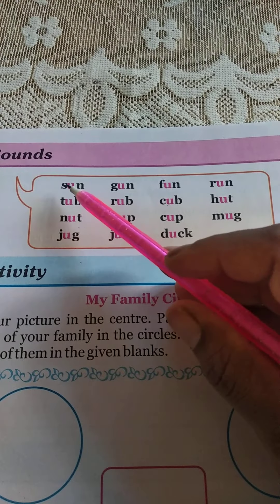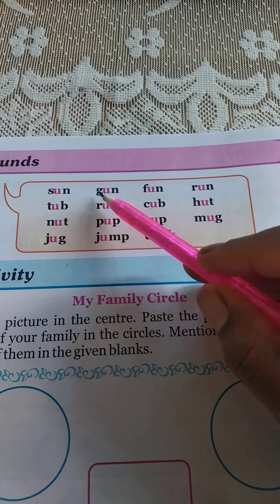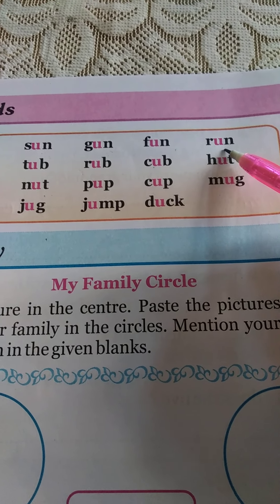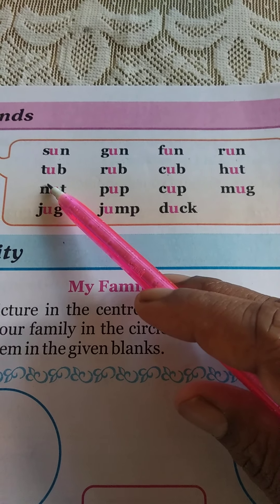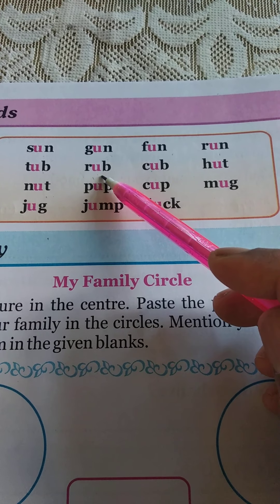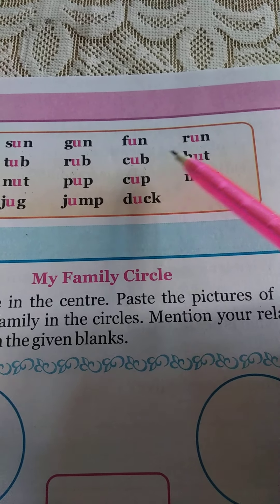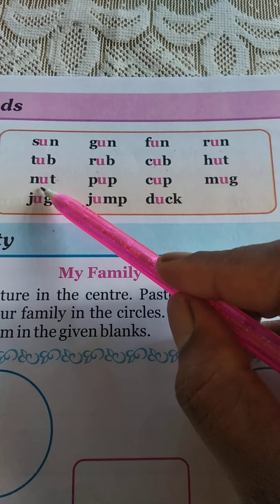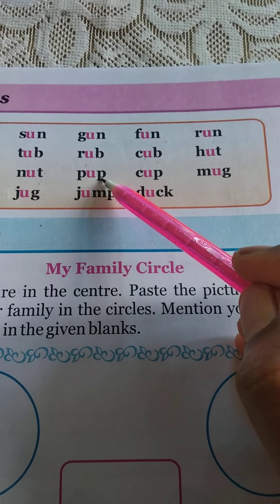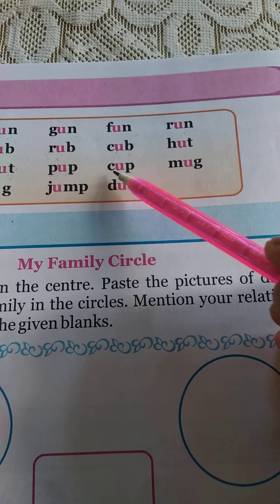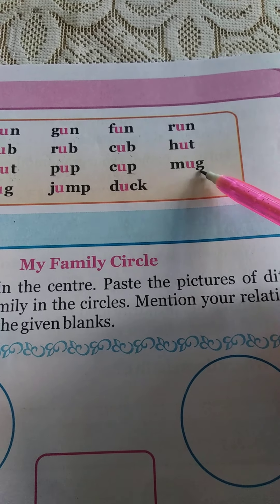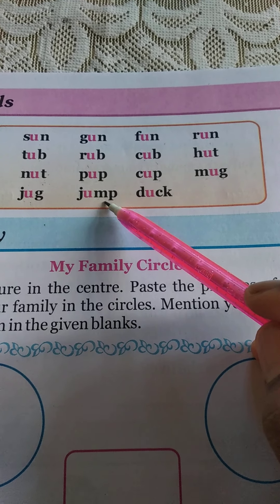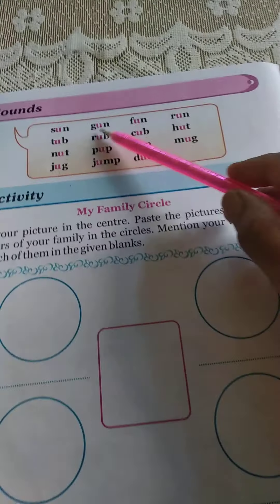Here, word family practice with the short 'u' sound: S-U-N — Sun. G-U-N — Gun. F-U-N — Fun. R-U-N — Run. T-U-B — Tub. R-U-B — Rub. C-U-B — Cub. H-U-T — Hut. N-U-T — Nut. P-U-P — Pup. C-U-P — Cup. M-U-G — Mug. J-U-G — Jug. J-U-M-P — Jump. D-U-C-K — Duck. These words you also practice. Read and practice.